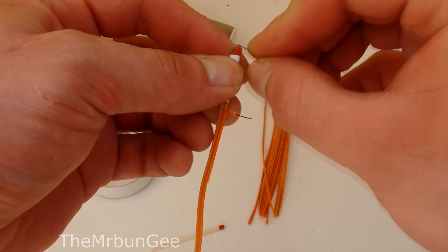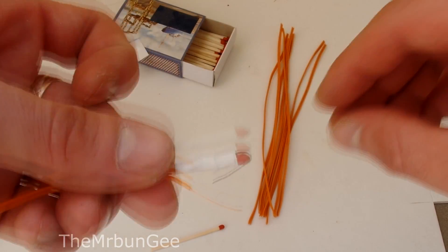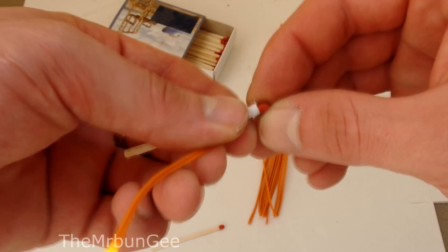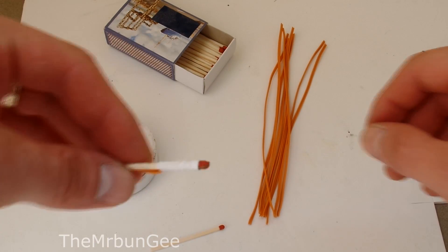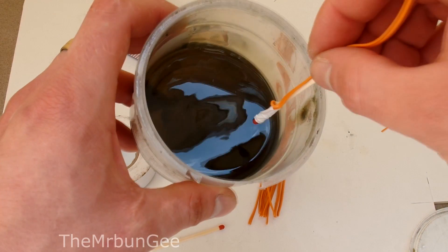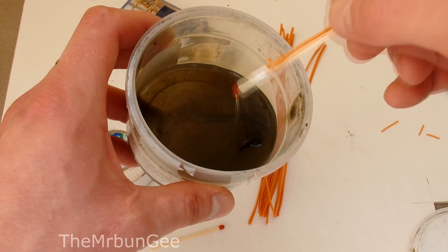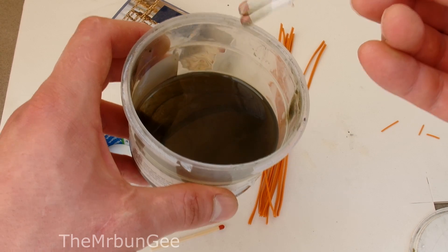Now bend the nichrome wire over the match head and tie the other wire around the match. Cover it with tape. Now dip it in the nitrocellulose lacquer and hang it to dry for about 20 to 30 minutes. You are basically done.